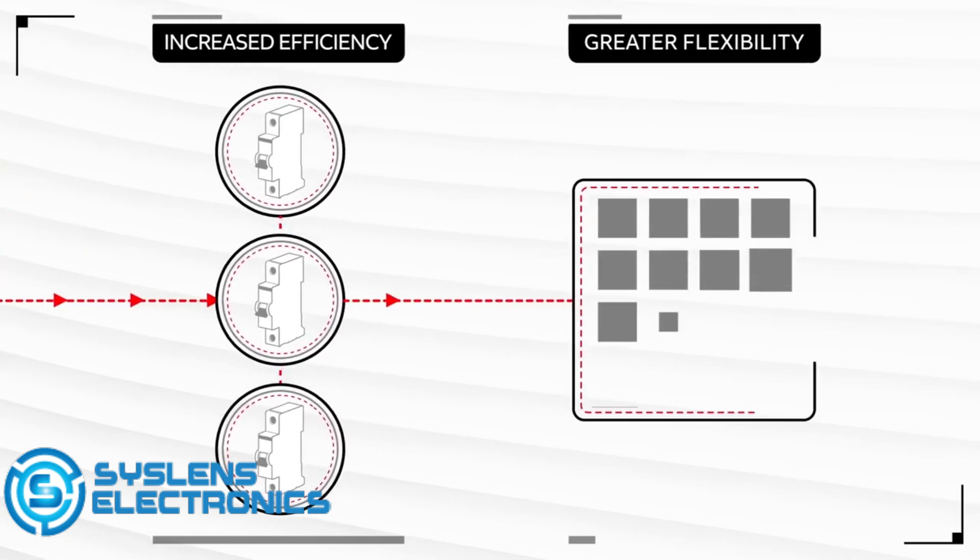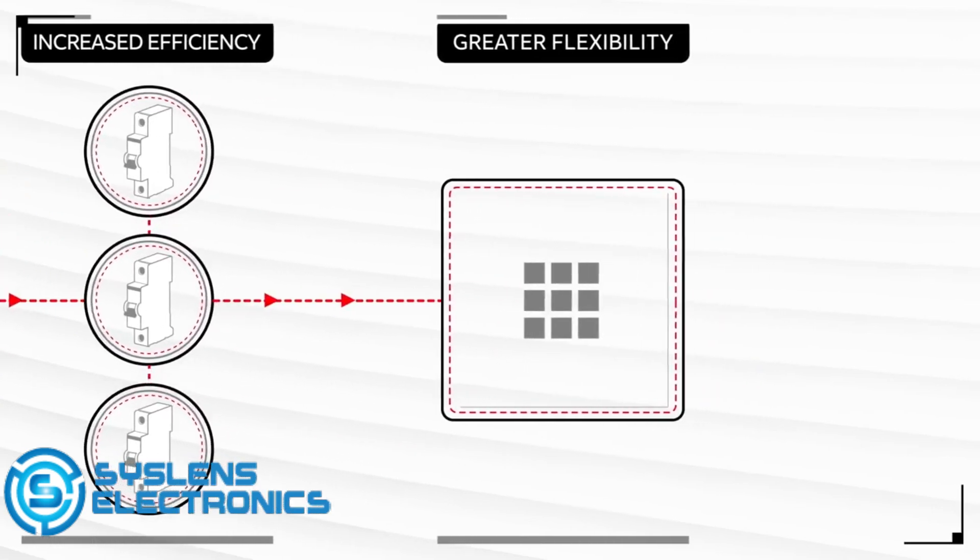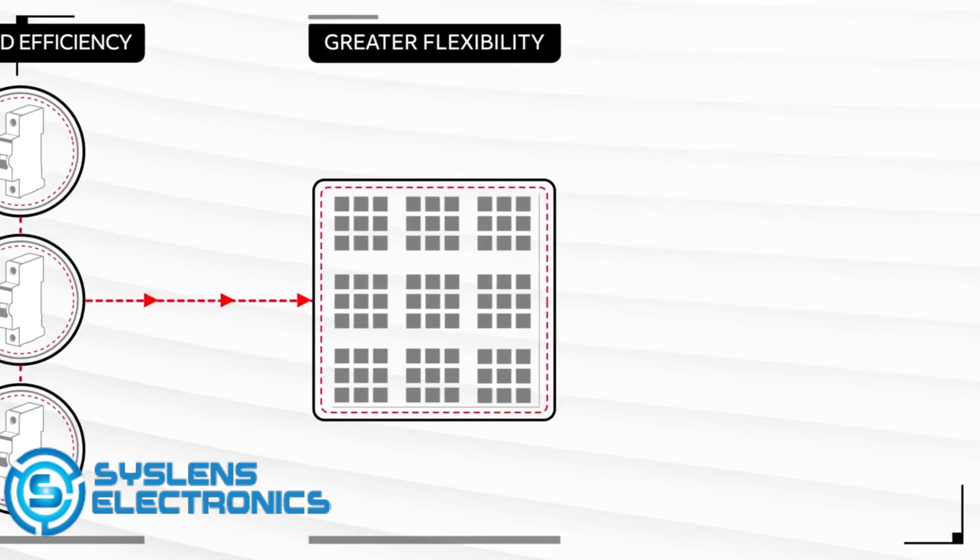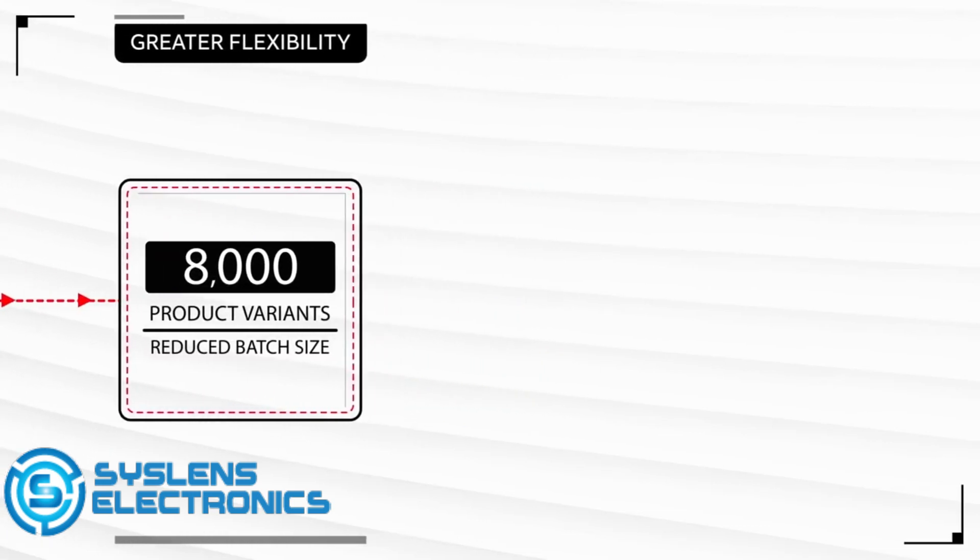It's increased our flexibility, so batch sizes can be smaller and more varied. This Heidelberg site alone can handle 8,000 product variants.